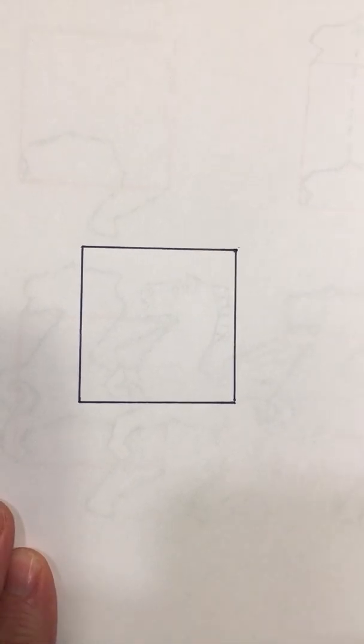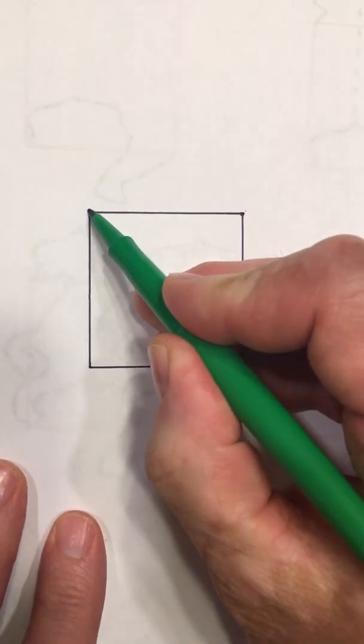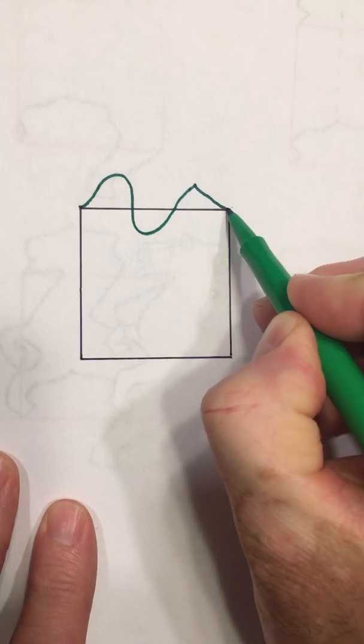First thing we're going to do is start out with the shape we know tessellates, and so I just chose a square. And I'm going to just make a squiggle that goes from one vertex to the other vertex, just like that.